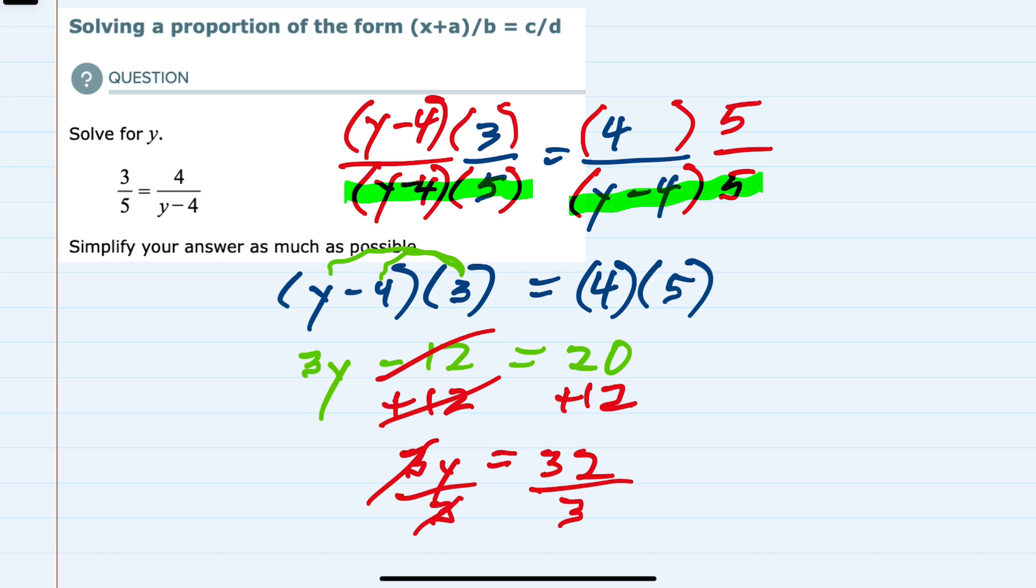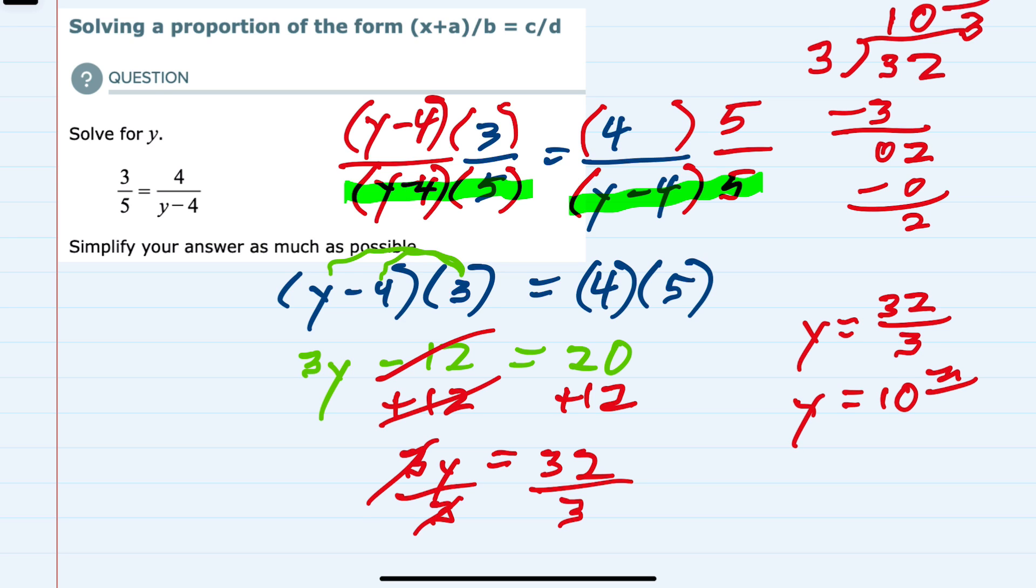That leaves me with just the y on the left-hand side, and the right-hand side is 32 over 3, which as a fraction won't simplify, but it is improper, so just to write it as a proper fraction, 3 goes into 32 ten times into 30, and then 3 does not go into 2, so our remainder is 2 over 3, so y equals 10 and 2 thirds is our simplified solution.